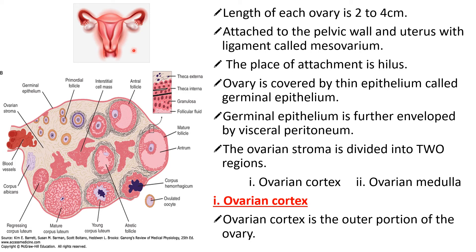The ovary is covered by a thin epithelium called germinal epithelium. This outermost envelope or layer is very thin and is made up of epithelium called germinal epithelium. Germinal epithelium is further enveloped by visceral peritoneum — one more layer is present on the germinal epithelium called visceral peritoneum.